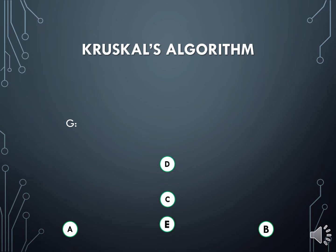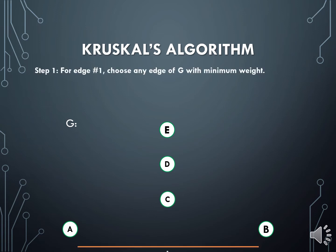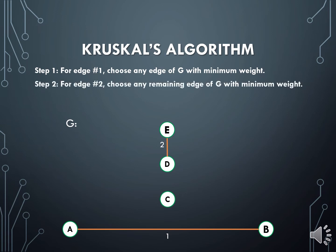Kruskal's algorithm provides us with a methodology to quickly identify a minimum spanning tree from a connected graph. In step one, we choose our first edge to be an edge of G with minimum weight. For this example, we pick the edge AB, which has a weight of 1. For step number two, we choose any remaining edge of G with the minimum weight. Hence, we can choose the edge DE, which has a weight of 2.